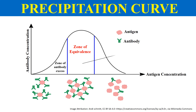After the antibody-excess zone, there is a zone known as the zone of equivalence — the zone where precipitation occurs. If the antigen is in excess, there will again be no precipitation. Precipitation only occurs when the antigen and antibody are present in equivalent amounts. If either antibody or antigen is in excess, there will be no precipitate formation. The zone where precipitation forms is called the zone of equivalence, and the overall curve is called the precipitation curve.